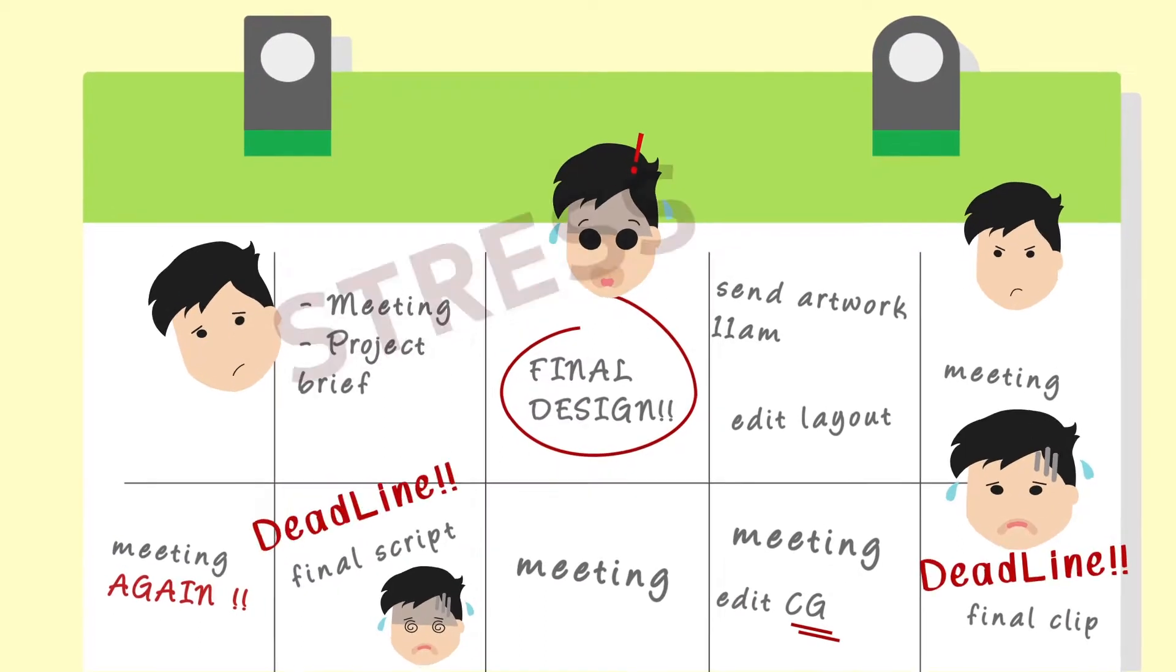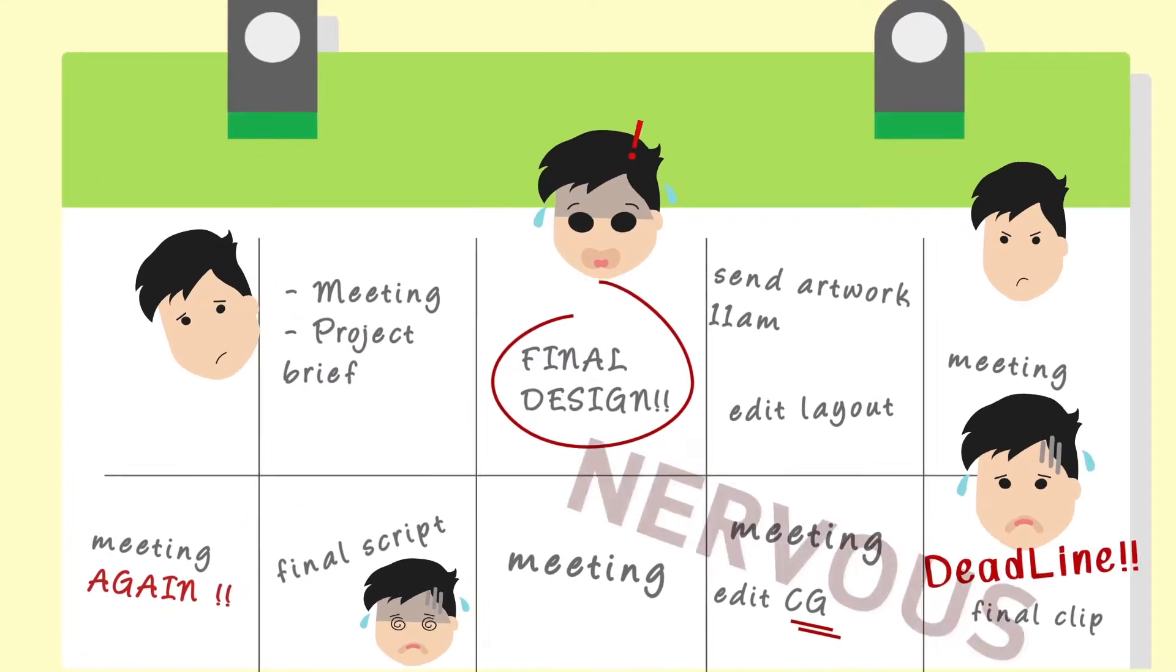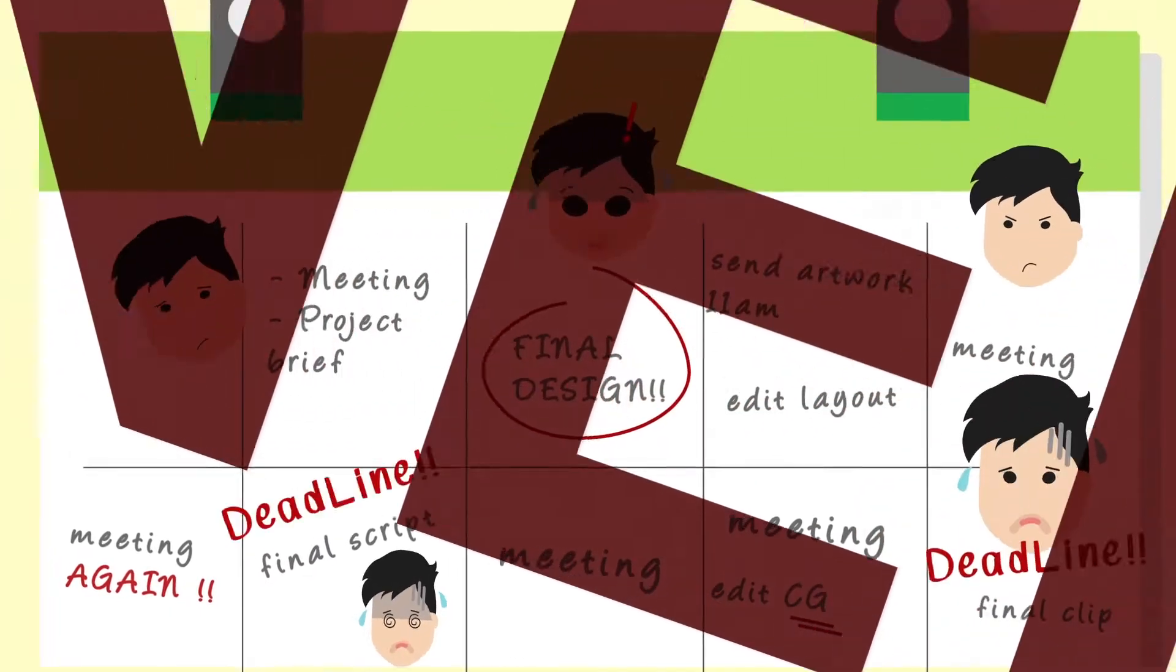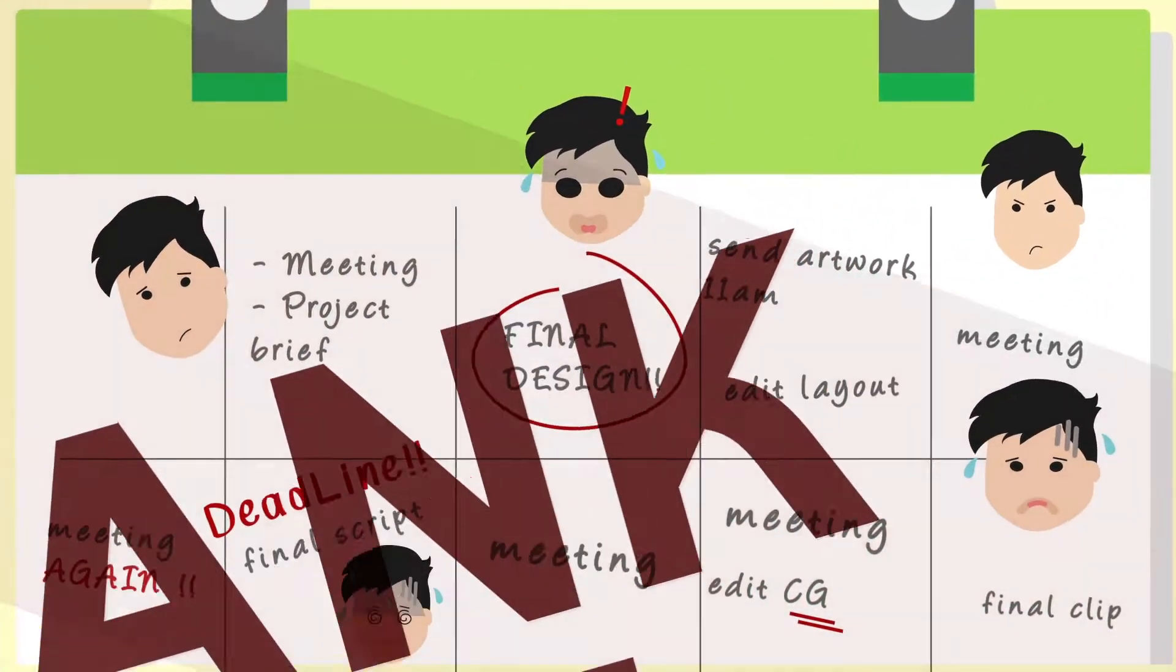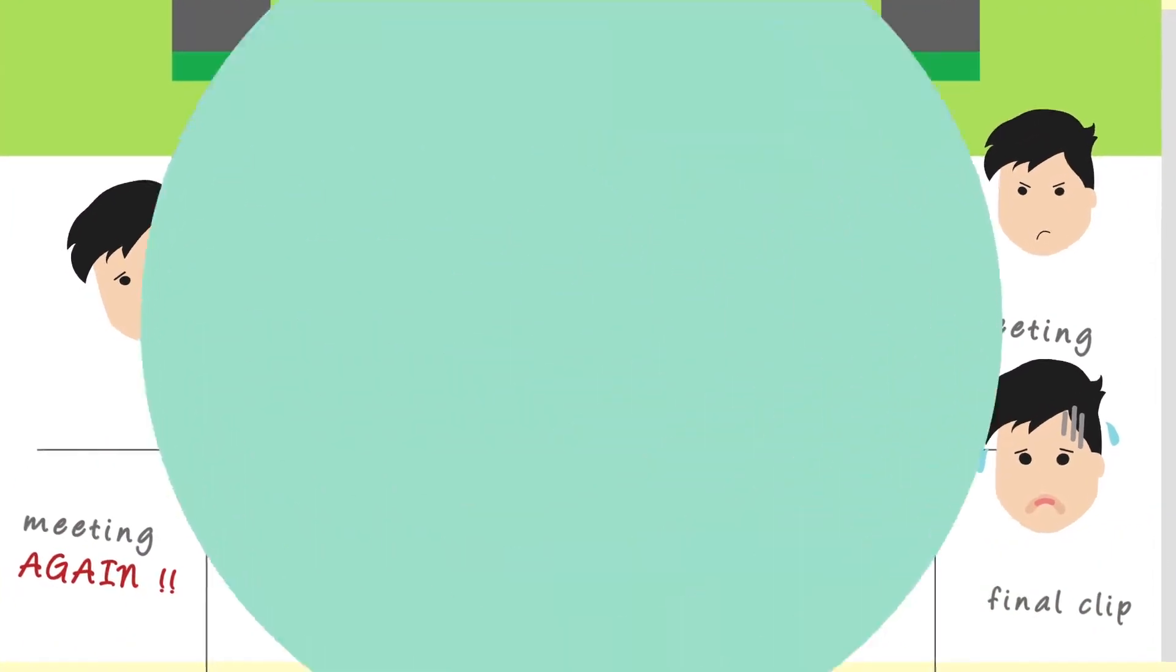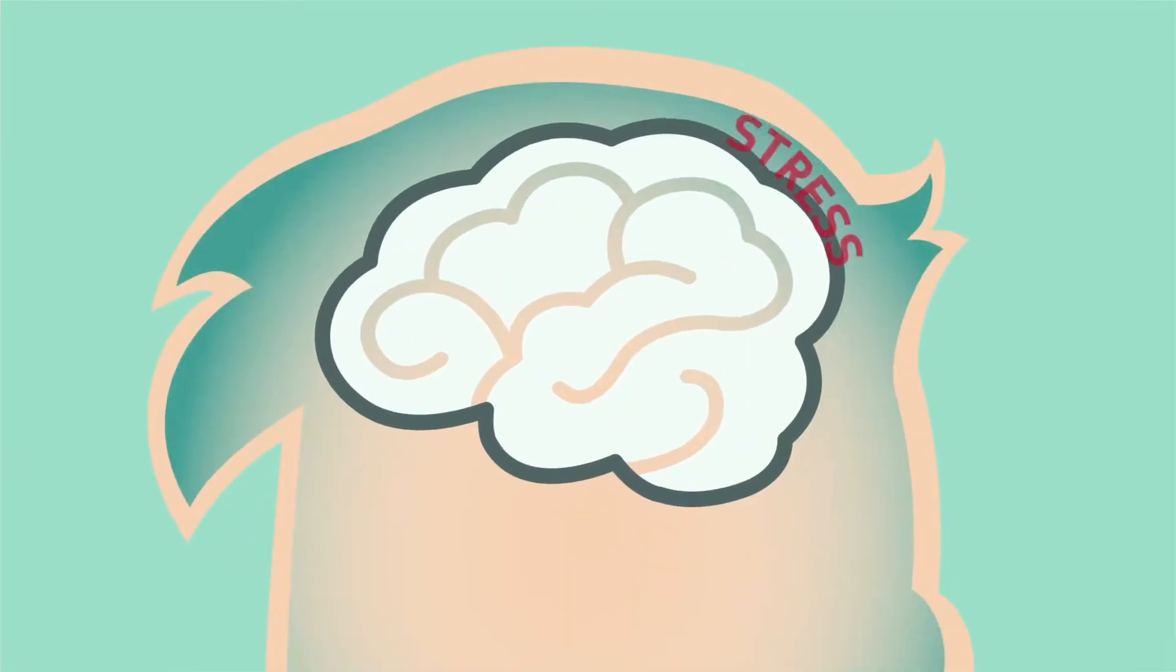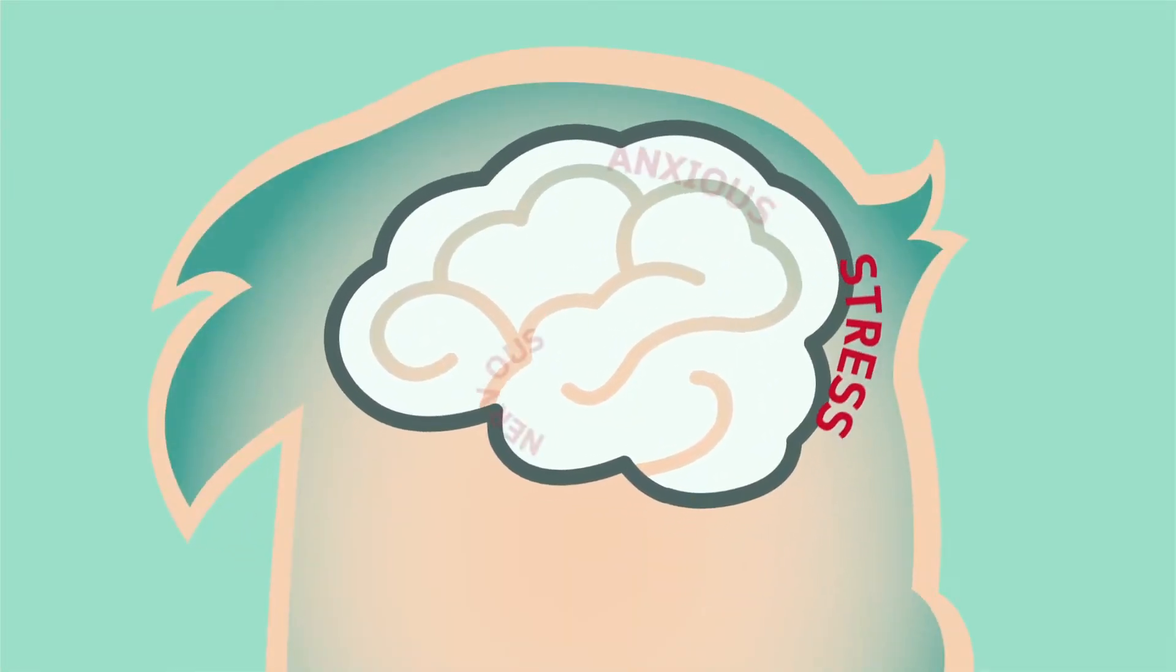Stress is taking a toll on our brain. It could damage neuron structure permanently. Science reveals that stress can make you dumber. It's a natural self-defense mechanism. But when stress develops into chronic stress,